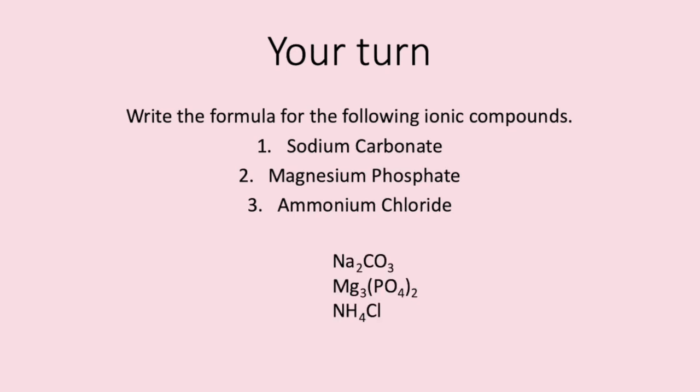Number one, sodium carbonate. It contains sodium one plus ions and carbonate two minus ions. Sodium can be found on the periodic table whereas carbonate was one of the polyatomic ions. We cross these over meaning we need two sodiums for every one carbonate. Making the compound Na2CO3.